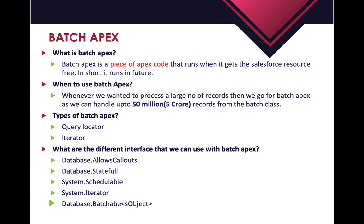Another example is sending invoices on a regular interval basis to all customers who placed an order in a given day. There might be millions or thousands of customers placing orders, so you cannot manually go to each and every record and click a send invoice button - that would be very hectic and time-consuming. In that case, you can write a Batch Apex to send invoices to all customers who placed an order that day.